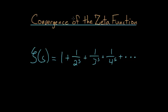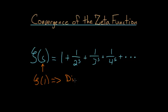In this video, let's focus on which values of s the zeta function actually converges to some value. We know that the zeta function evaluated at 1 — if I put a 1 in here for s in all of these terms, I'll get the harmonic series. And it's true that the harmonic series actually diverges, or in other words, as you add more and more of these terms, the sum starts to approach infinity.